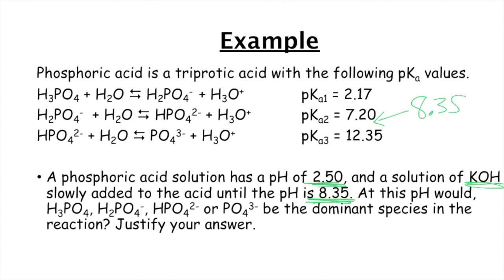So we're past, we're definitely, that's not, definitely not the dominant species anymore. And that's not the dominant species anymore because we are a little past half equivalence. Past half equivalence is telling us that we've got more of the conjugate base. So this right here is going to be our dominant species.